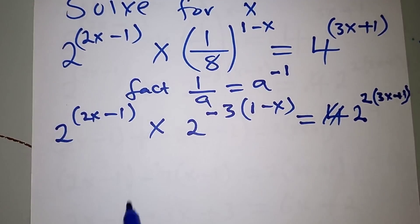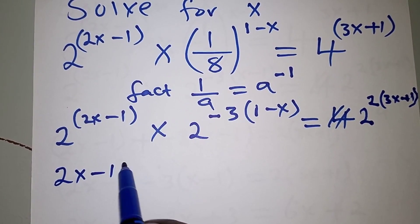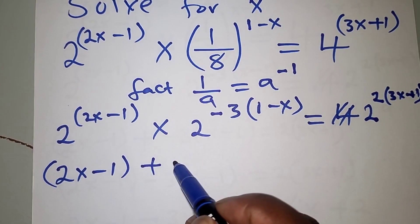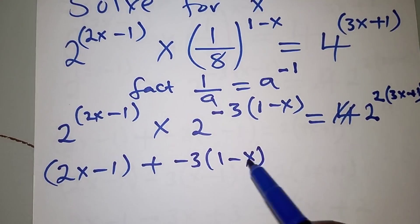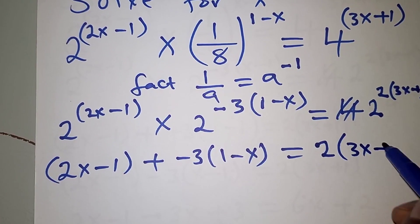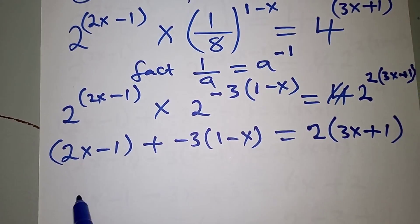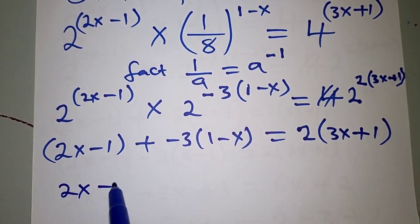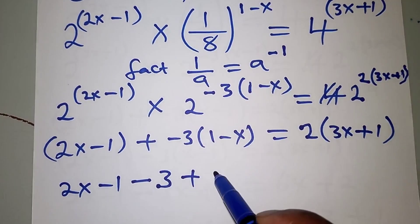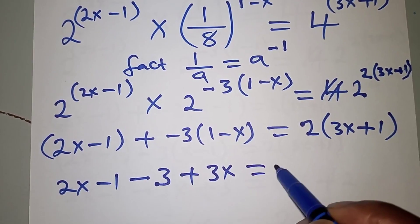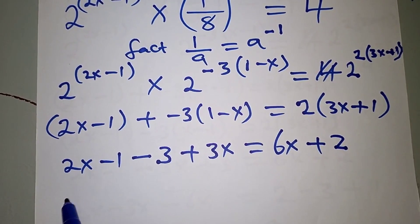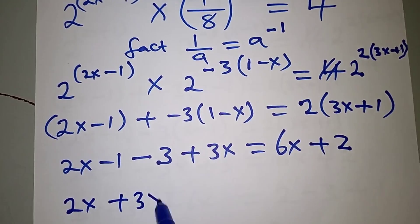Talking of 2x minus 1, the sign between them is multiplication, so when we combine the indices we use addition. We have 2x minus 1, minus 3, plus 1 minus x, and this is equal to 3x plus 1. Since we were multiplying the bases, we add the indices: 2x minus 1 minus 3 plus 3x equals 6x plus 2.